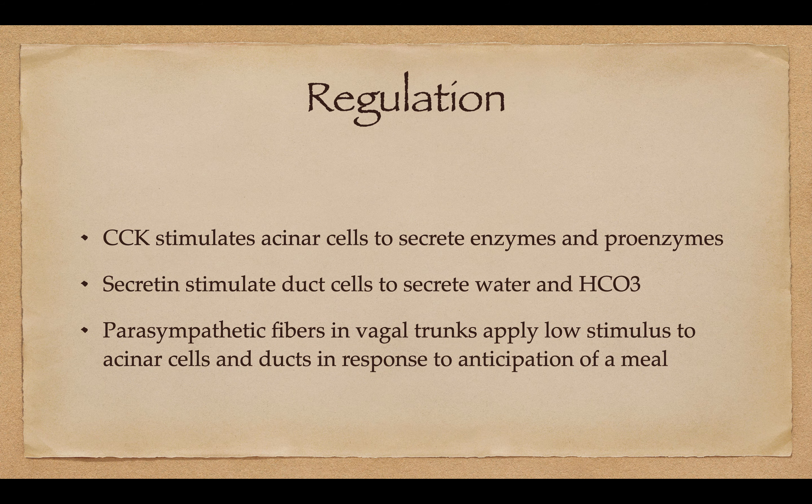Cholecystokinin will stimulate the acinar cells to secrete the enzymes and proenzymes. Secretin will stimulate the duct cells to secrete water and bicarbonate. The parasympathetic fibers in the vagal trunk — cranial nerve 10 — apply low-level stimulus to the acinar cells and ducts in response to anticipation of a meal. So when you're hungry and you see the meal in the restaurant and smell the food, this helps produce the salivation response and also why you can feel your gut rumble — this is the anticipation response.